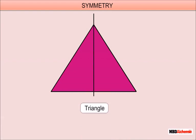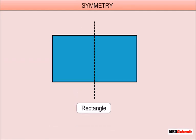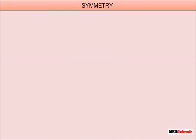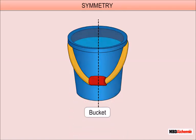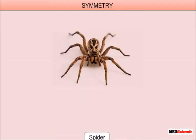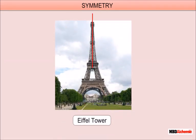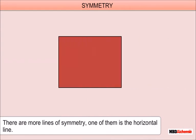Examples with vertical line of symmetry include: triangle, circle, rectangle, English letter A, English letter I, bucket, plate, spider, and Eiffel Tower.